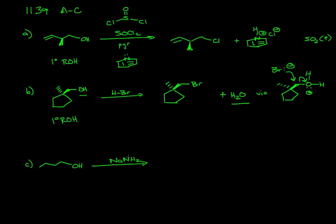In part C, again, we're taking a primary alcohol. In this case, we're treating it with sodium amide. So let's draw out the Lewis dot structure for that amide portion.